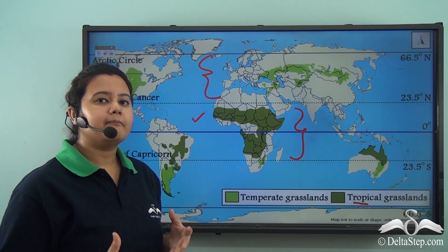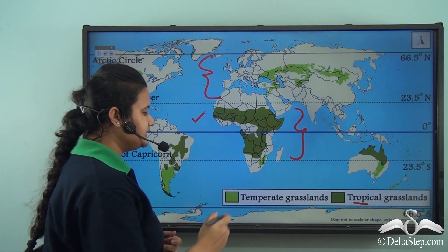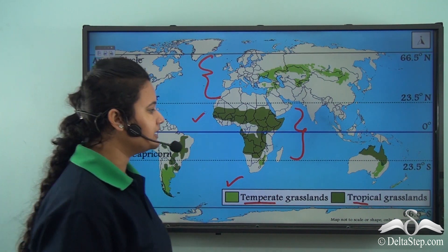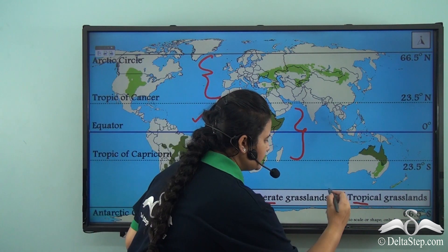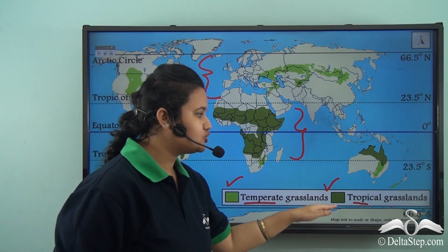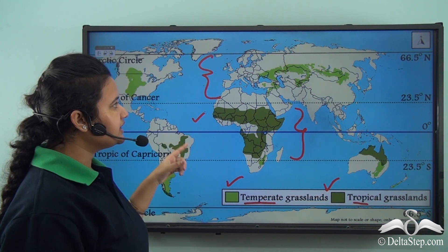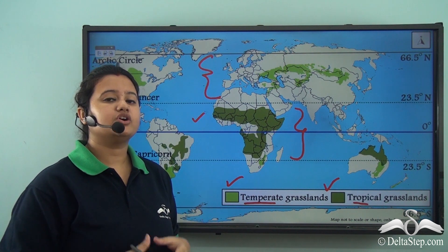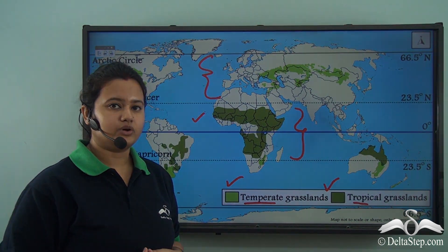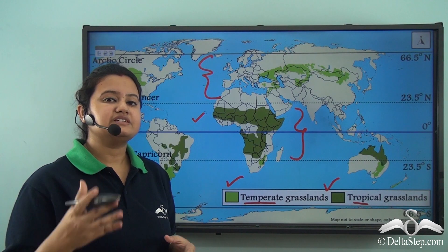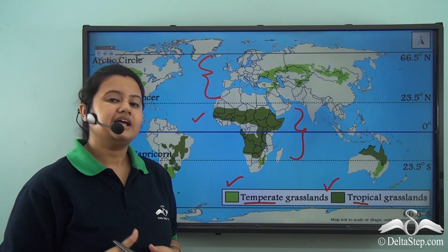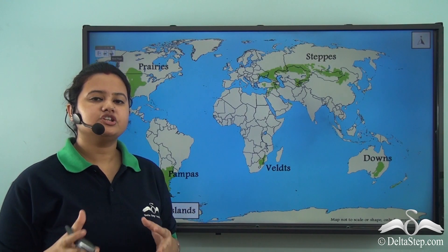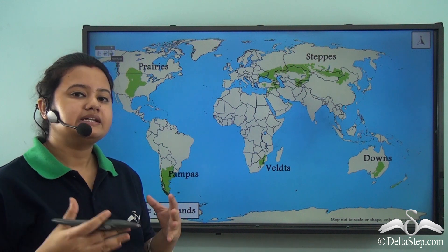On this map, regions marked in light green refer to temperate grasslands, while regions in a darker shade of green depict tropical grasslands. As we can see, temperate grasslands are spread across several continents of the world.